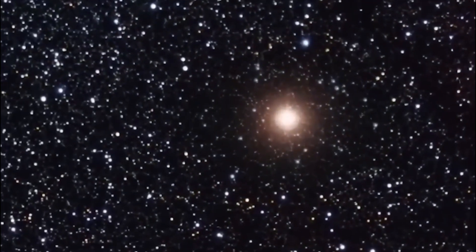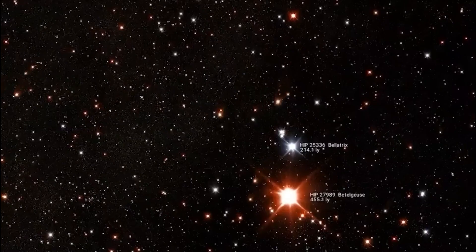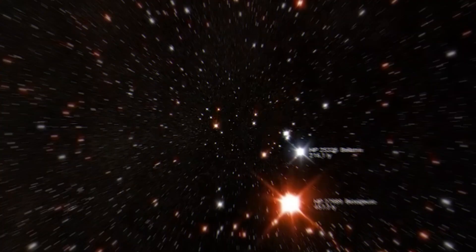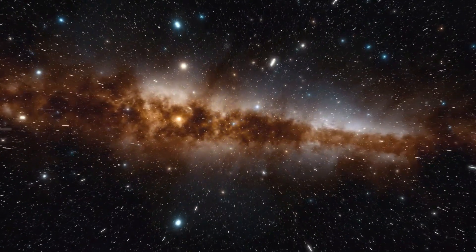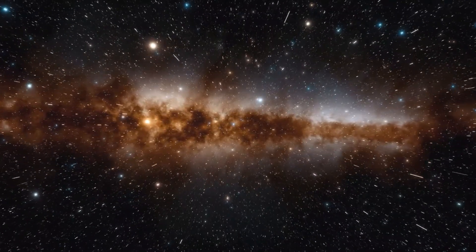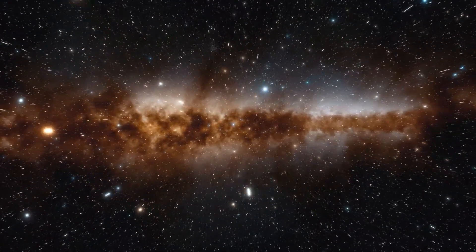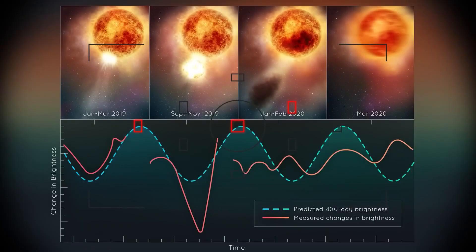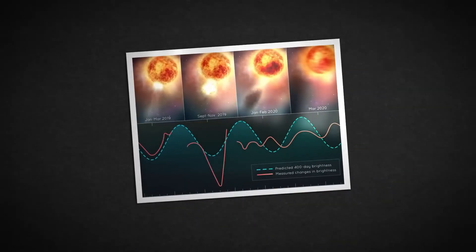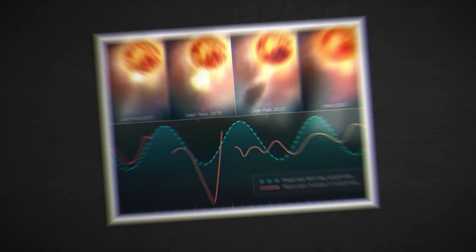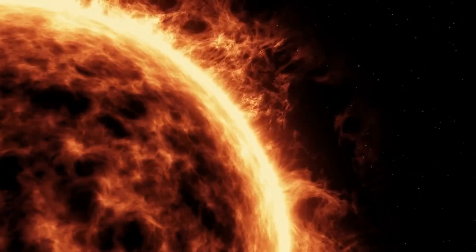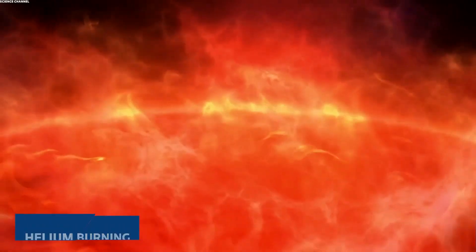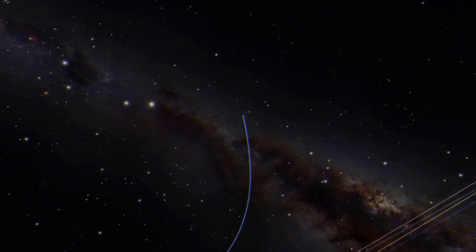And what happens to Betelgeuse after it dazzles the universe with its spectacular finale? Does it become a black hole, a neutron star, or something else entirely different? That depends on the mass it sheds during the explosion. If it loses enough mass, it could leave behind a dense neutron star, while a more massive core could collapse into a black hole.